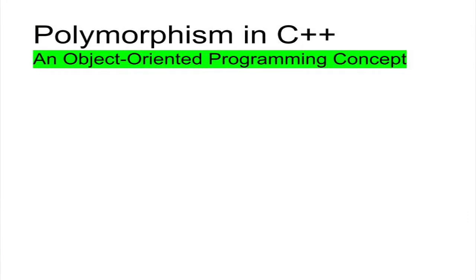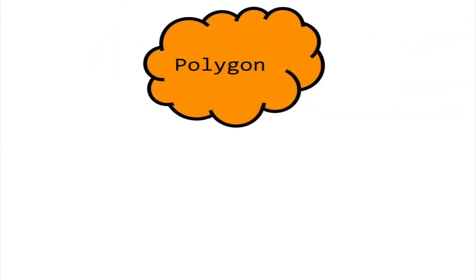In this tutorial, we will be looking at polymorphism in C++. Like inheritance and composition, polymorphism is another fundamental concept in object-oriented programming.